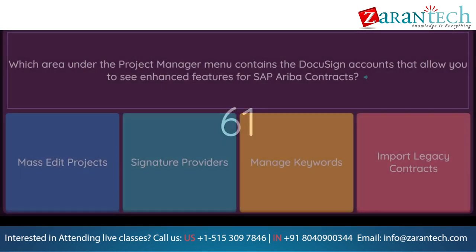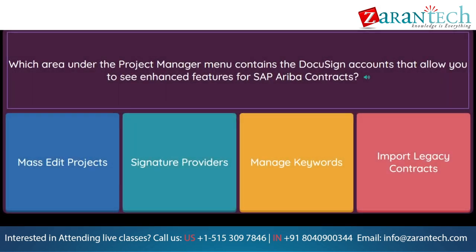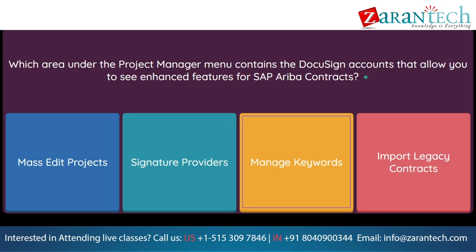Question: Which area under the project manager menu contains the DocuSign accounts that allow you to see enhanced features for SAP Ariba Contracts? Option 1: mass edit projects. Option 2: signature providers. Option 3: manage keywords. Option 4: import legacy contracts.